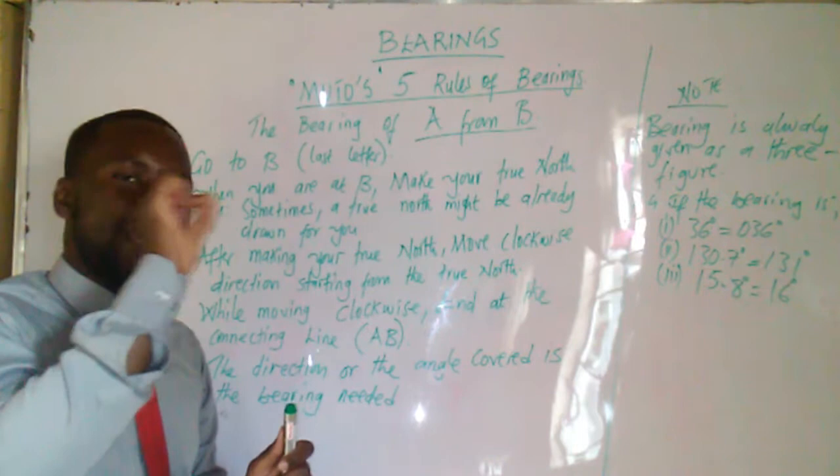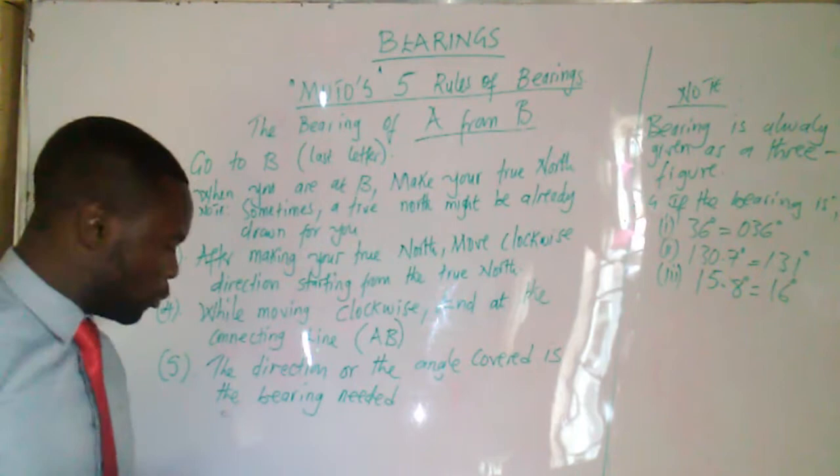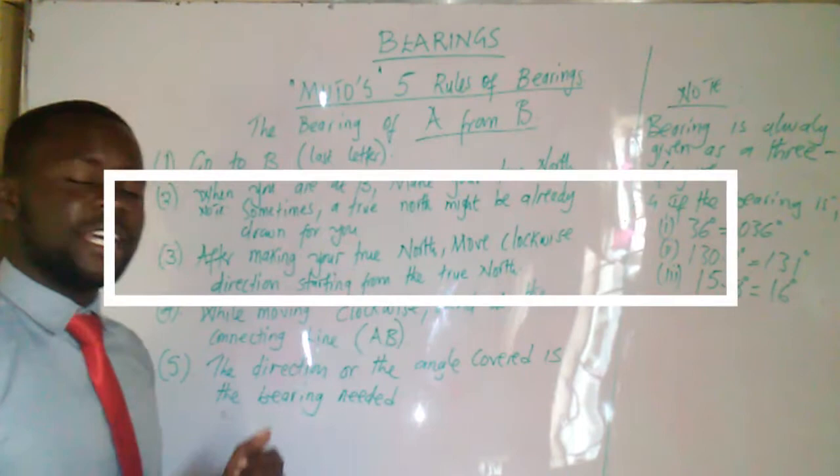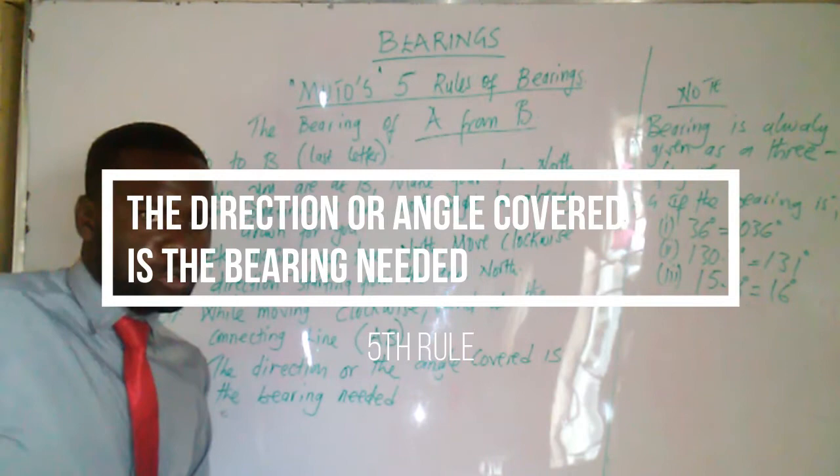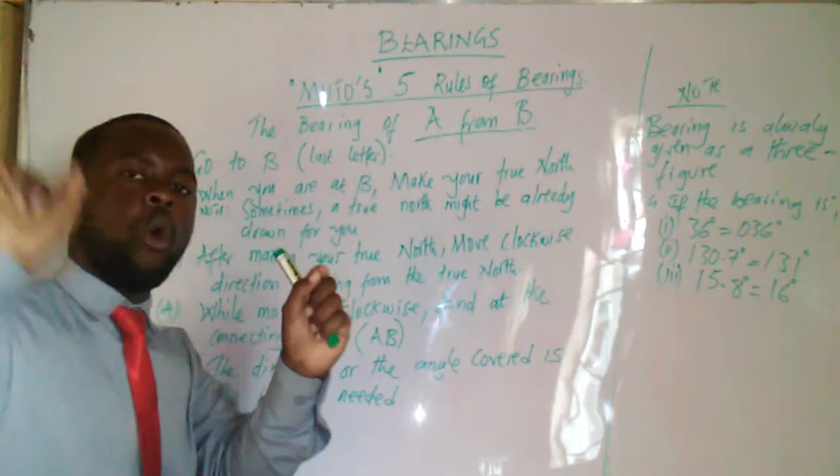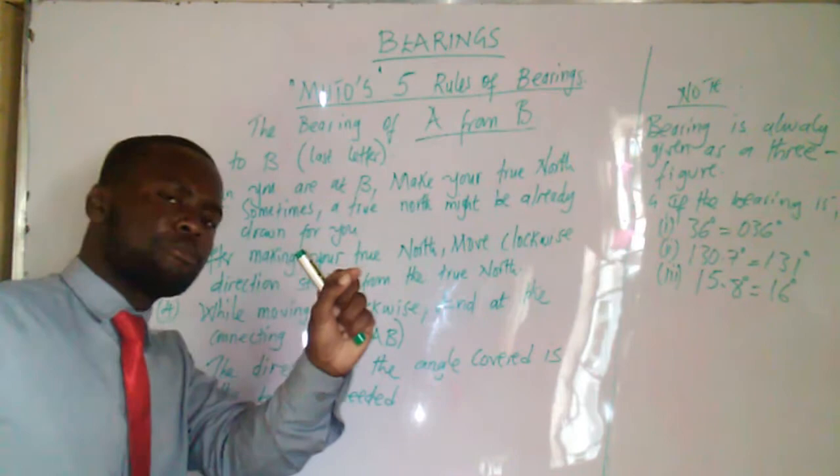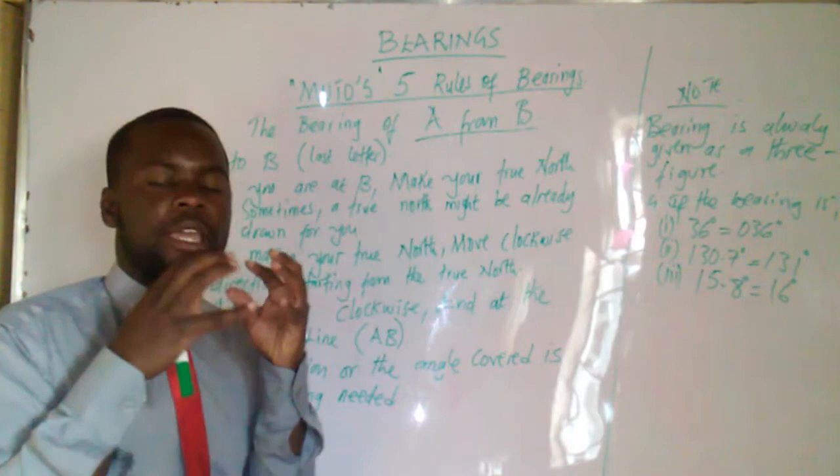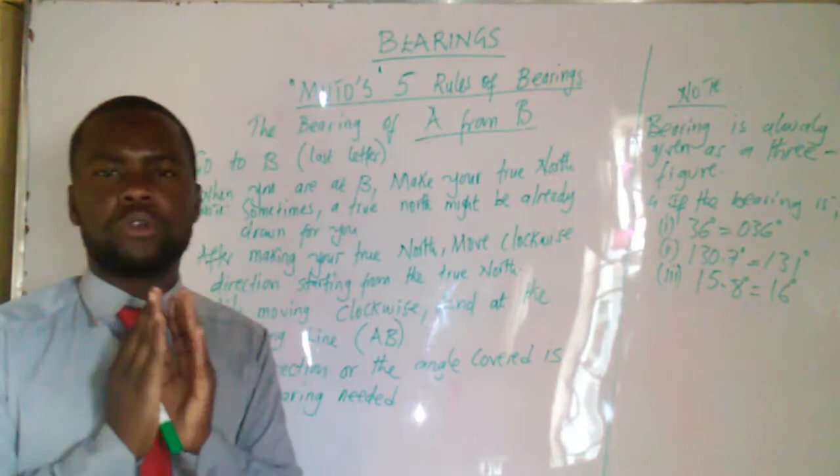When you end from there, it will give rise to the five rule, Muto's rule. This is the final rule which is saying the direction of the angle covered is the bearing needed. So when you are moving clockwise direction starting from your true north, you end at the connecting line which is line AB. The direction or the angle you have covered, starting from the north up to the connecting line, that angle is the bearing needed. Very simple rules.